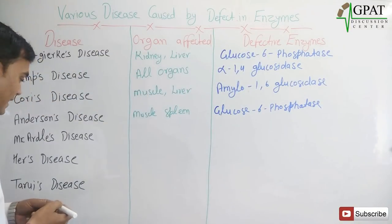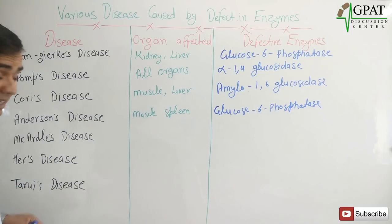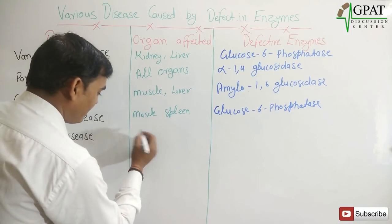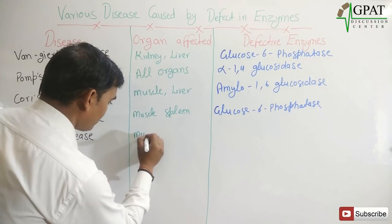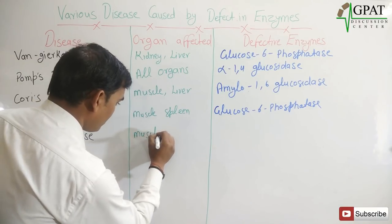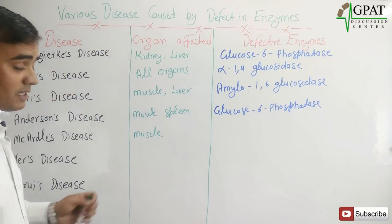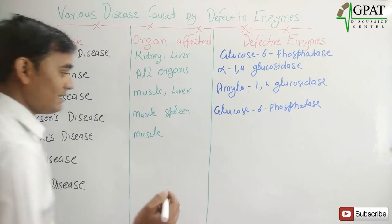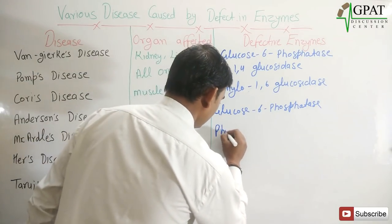Next, McArdle disease. McArdle disease mainly affects muscles. The enzyme responsible for McArdle disease is phosphorylase.